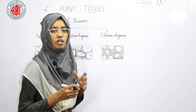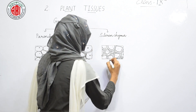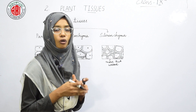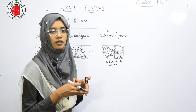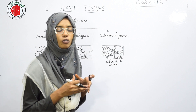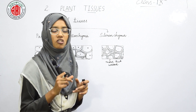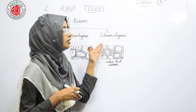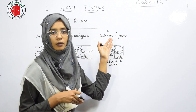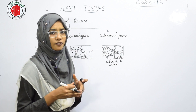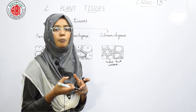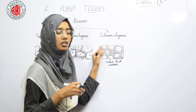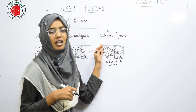The next type is sclerenchyma. Sclerenchymatous cells are compactly arranged and do not show any intercellular spaces between them. They are more thick-walled than colenchyma. Because these tissues are thick-walled with no air spaces, they help in the formation of hard wood of the trunk. When we cut the trunk, the hard structure at its center is made up of sclerenchymatous tissues.